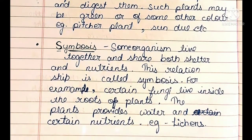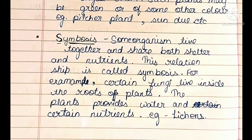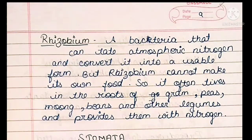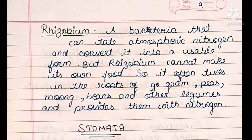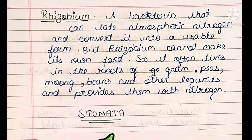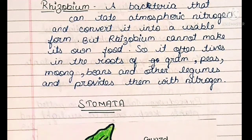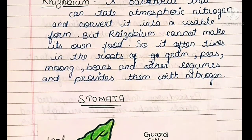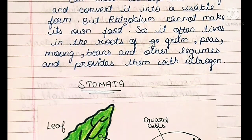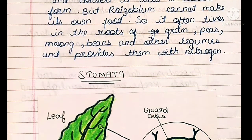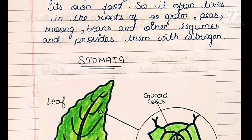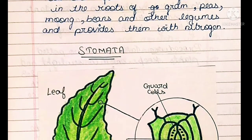The plants provide water and certain nutrients. For example, lichens. Rhizobium: A bacteria that can take atmospheric nitrogen and convert it into a usable form. However, Rhizobium cannot make its own food, so it often lives in the roots of gram, peas, moong beans, and other legumes, and provides them with nitrogen.